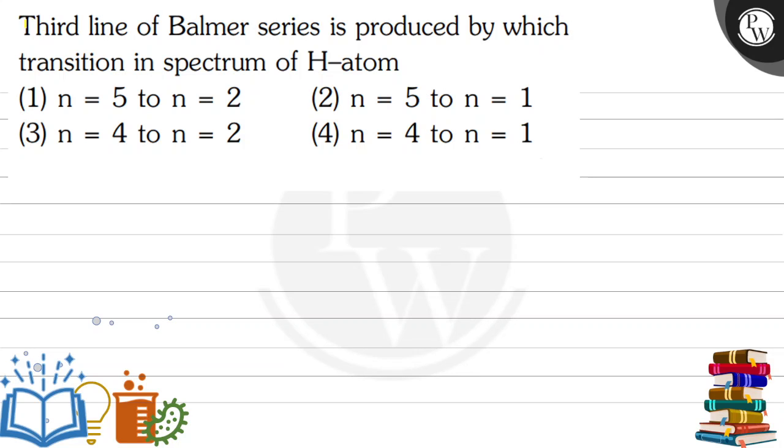Hello Bachchon, let's see the question: third line of Balmer series is produced by which transition in spectrum of hydrogen atom. We have four options here. Option one: n equals to five to n equals to two.